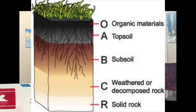Lastly, we have R, which is the bedrock. This is known as the parent material. So if there's quartz below all the soil that formed, the quartz would be the parent material. It's the last level, and it's called bedrock. That's it for soil.